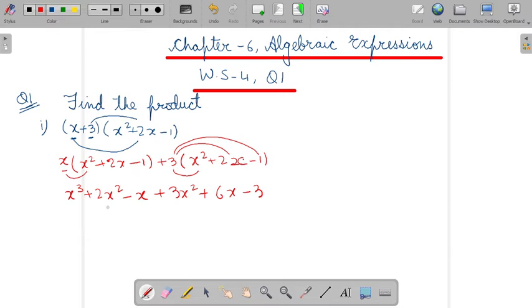We have to collect the like terms. So x cube as it is, 2x square plus 3x square. So this will become 5x square minus x plus 6x. So this will become 5x and minus 3 which is an unlike term. So we will keep it as it is.